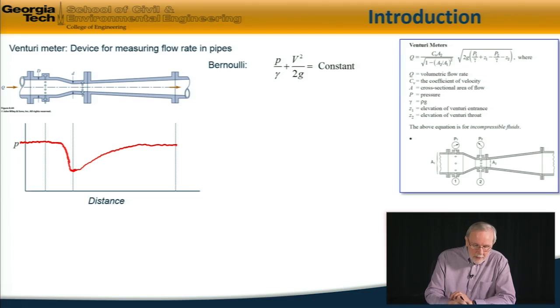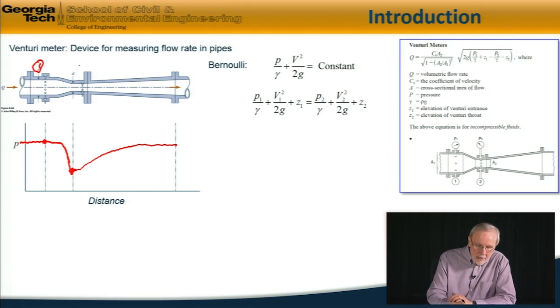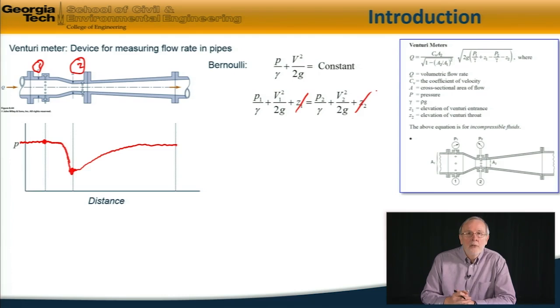Now we can relate the pressure difference at the throat here and the upstream pressure to the flow rate by continuing with the Bernoulli equation. So if I have station one upstream here and station two at the throat, we have the Bernoulli equation as shown. If the meter is horizontal, then the elevations Z1 and Z2 are the same, so they cancel out, leaving us with this equation.